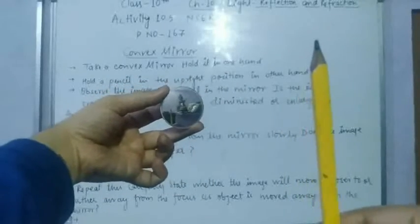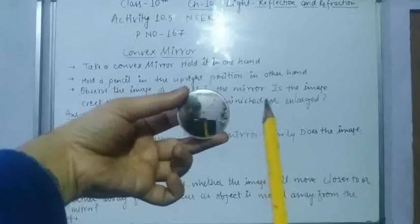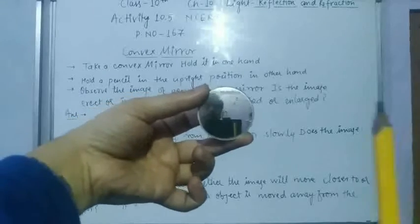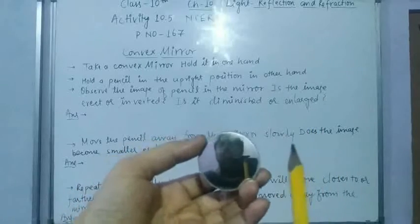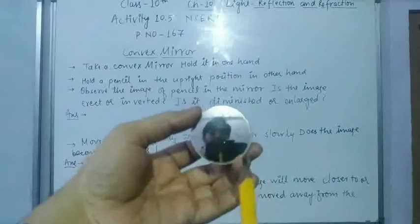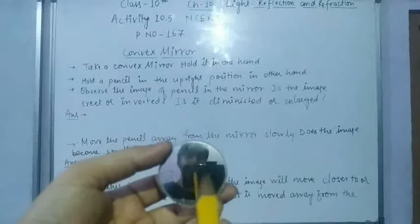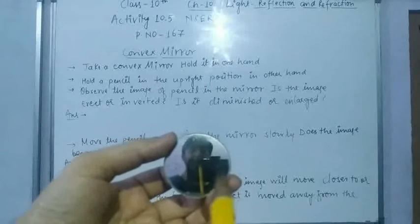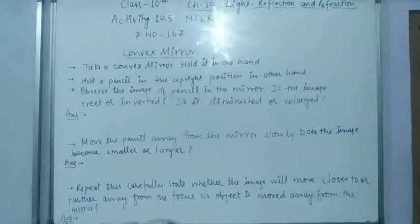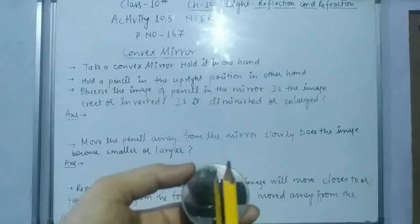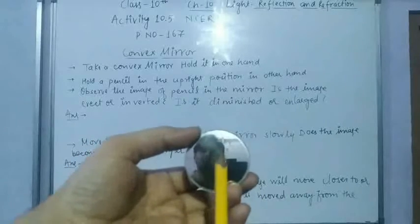You can see the convex mirror will always give an erect image. When I am holding the pencil, at any distance it is giving an erect image of the pencil — it is not inverting, whether I bring the pencil close or move it farther away from the mirror. Now observe the image of the pencil in the mirror.